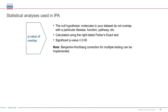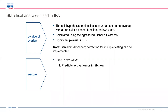You also have the opportunity to correct for false positives using a Benjamini-Hochberg correction for multiple testing. In addition, IPA uses z-score calculations for data interpretation in two ways. First, it's used to make predictions about the activation state of pathways and upstream regulators. It requires some sort of directional expression or phosphorylation data, and it compares the expression or phosphorylation patterns of molecules in your data set with what's known in the Ingenuity Knowledge Base.